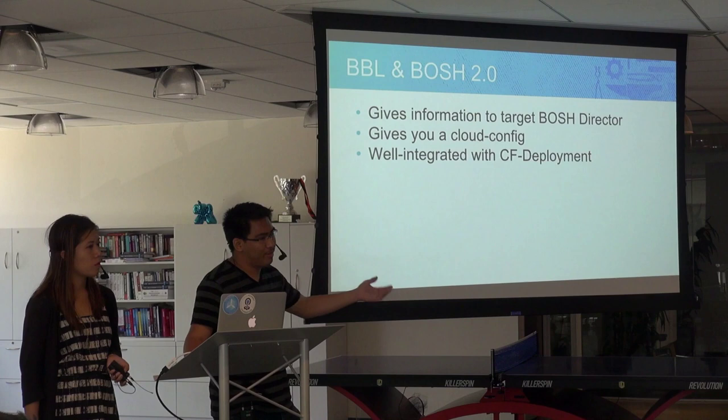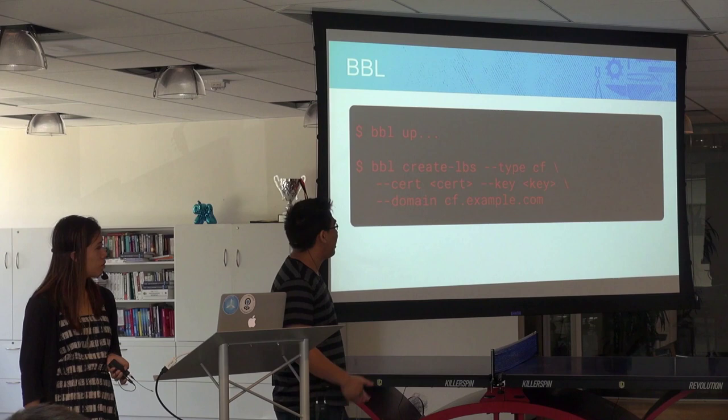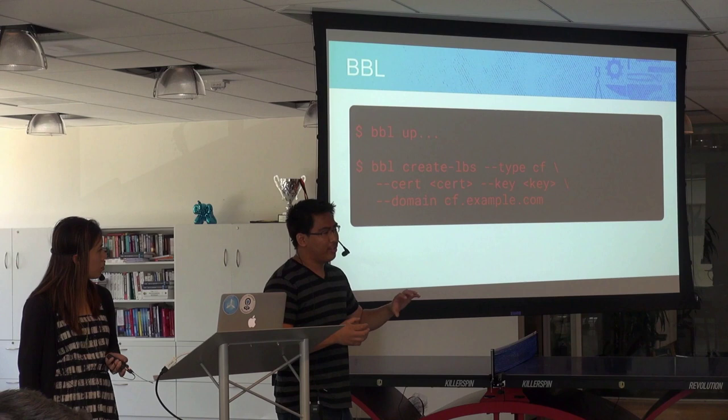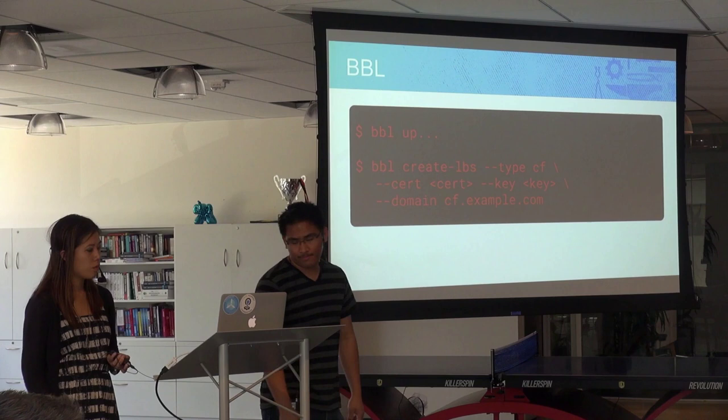It's well integrated with CF Deployment. The commands look like: Bubl Up, which gives you the underlying infrastructure and your BOSH director, and then Bubl Create LBs, which gives you that extra specific load balancer that you can hook up your router to.